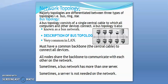WAN is a group of MANs, LANs, or a mixture of both networks. Now we move on to network topology. The major network topologies used are three types: bus, ring, and star. A bus topology consists of a single central cable to which all computers and other devices connect, and is also known as a bus network.